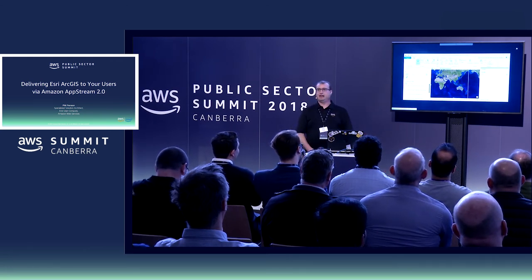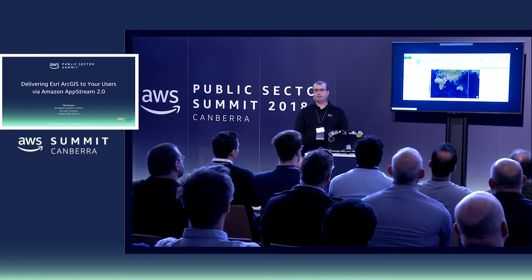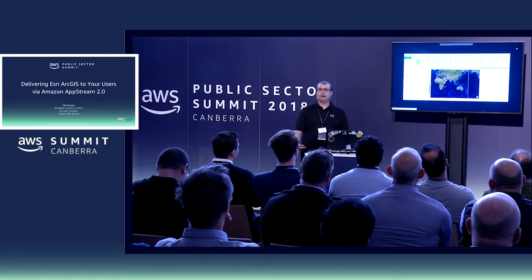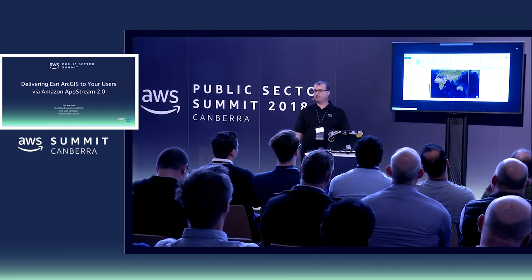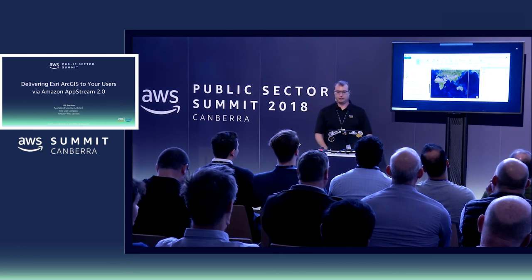As part of an AppStream environment and deployment, you pick the network you're going to place the AppStream instance into. From that, it has access to things like an ArcGIS Server on-premise or in the cloud, other shared assets through file shares on EC2, Esri license servers — you can access all of that really cool stuff.